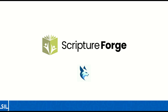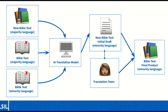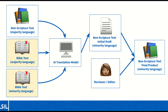Acts 2 builds on the ScriptureForge and Serval tools developed by the language technology team at SIL. These tools provide translation teams with AI-generated drafts of Scripture passages, which can serve as a starting point as they continue their translation work. However, the AI models which produce these drafts cannot start from scratch — they must first be fine-tuned on the parts of Scripture in the local language which the translation team has already completed. Using this same approach of fine-tuning translation models on a Bible in a minority language, Acts 2 extends this approach to non-scripture texts.